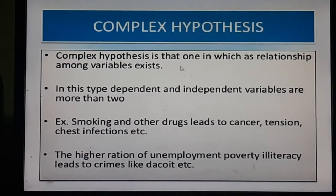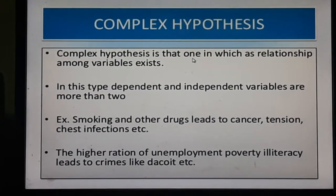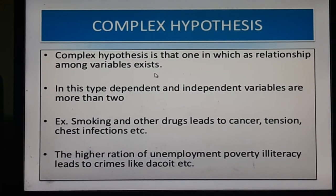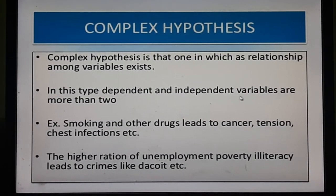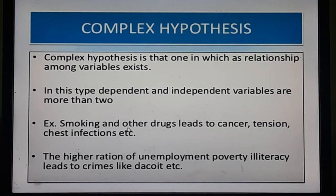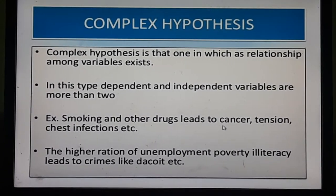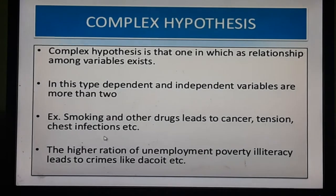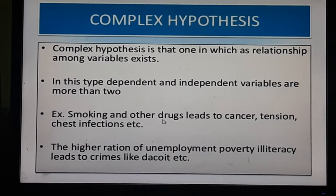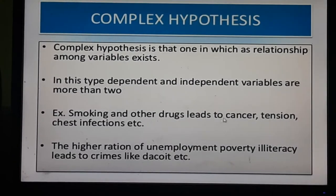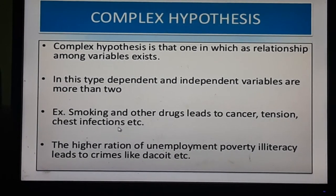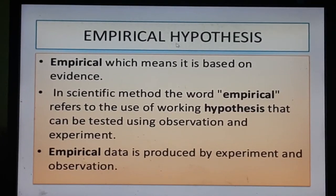Complex hypothesis is one in which a relationship among variables exists, where dependent and independent variables are more than two. For example, smoking and other drugs lead to cancer, tension, chest infection, etc. Here, smoking and other drugs are the independent variables, and cancer, tension, and chest infections are the dependent variables.